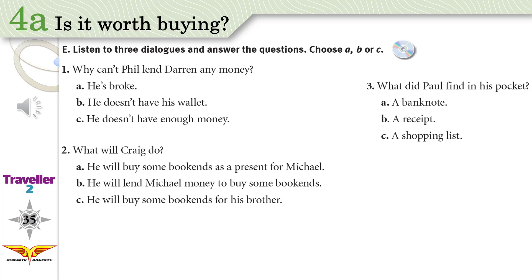Dialogue 3: Paul, what did you get from the supermarket? Whatever was on the list, and a few magazines. How much did you spend? I'm not sure. Wait, I think I still have the receipt in my pocket. No, it's not there. But look — 50 euros! I didn't know I had that. I love it when that happens.